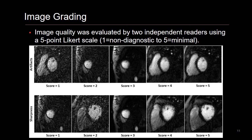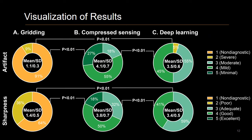We then had two expert cardiologists evaluate the reconstructions and grade them on a score of one to five, with one being non-diagnostic and five being minimal, for both artifact level and sharpness level. Here you see a visualization of our results. As expected, the standard gridding reconstruction showed significant aliasing artifacts and received poor average scores from the readers. Compressed sensing scored slightly better than our deep learning reconstruction in both artifact level and sharpness; however, all images were deemed to have moderate to minimal artifact severity and sharpness scores.